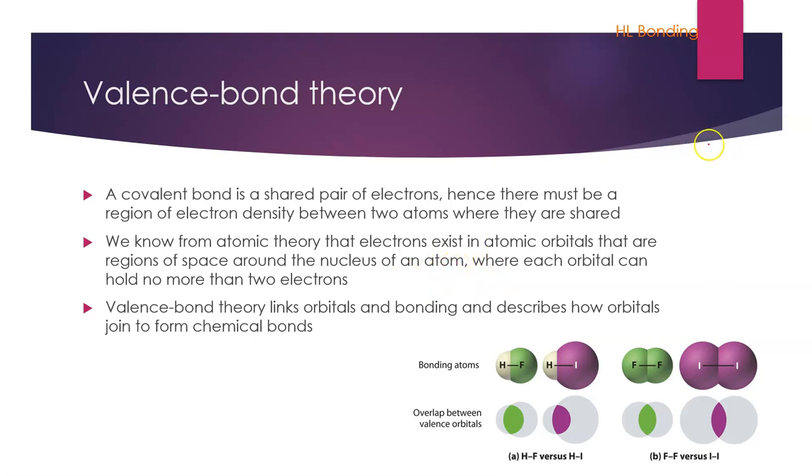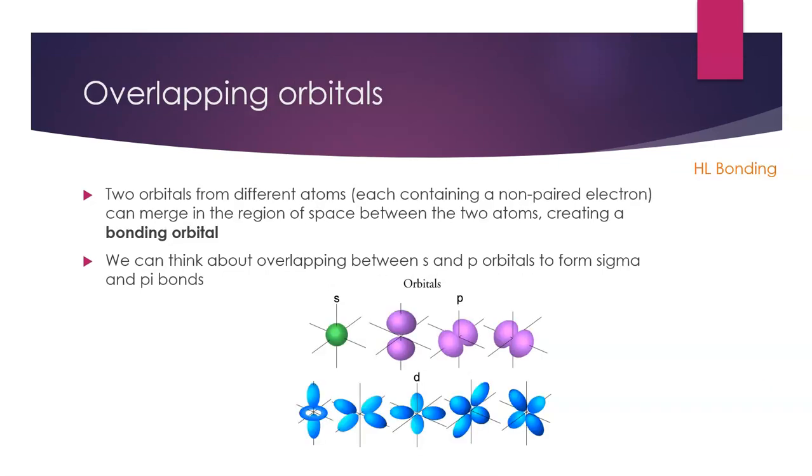So remember we have the s orbital, we have our p orbital, which comes in px, pz, and py, forming the three around the axis. So valence bond theory links orbitals and bonding and describes how orbitals join to form chemical bonds. With valence bond theory, it tells us whether or not it's an end-to-end or a sideways overlap.